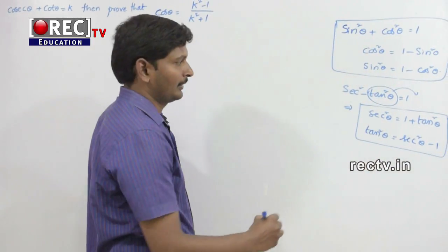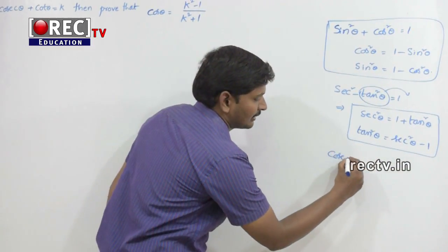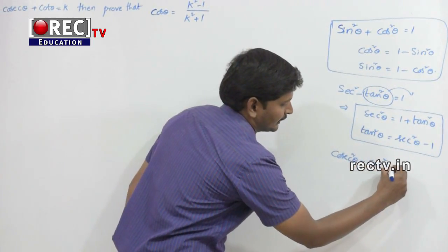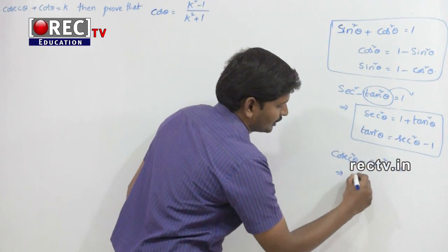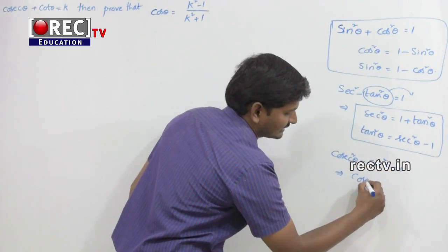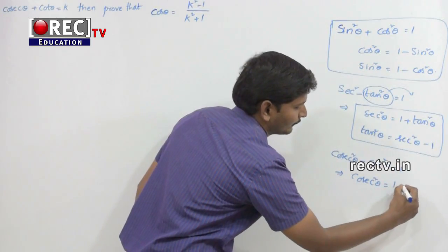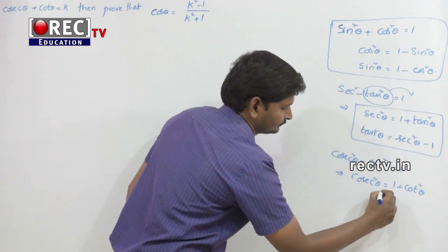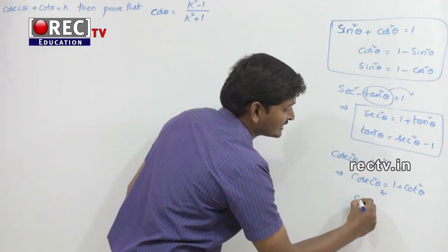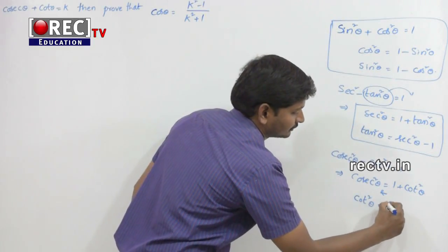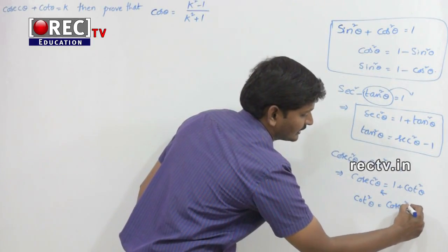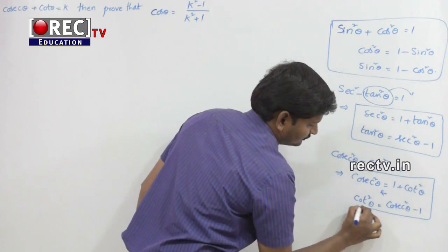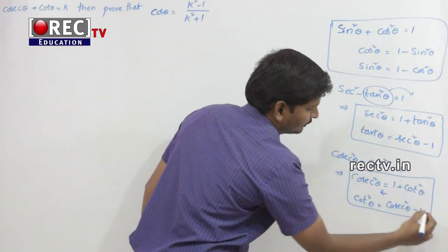Similarly, cosec²θ - cot²θ = 1. From this, cosec²θ = 1 + cot²θ, and cot²θ = cosec²θ - 1. You have to remember this.